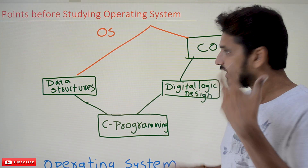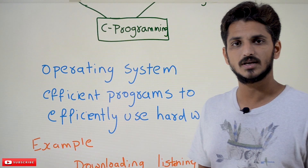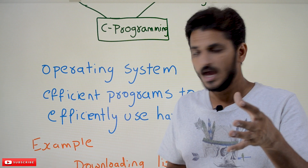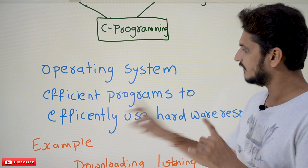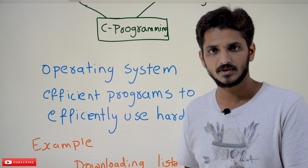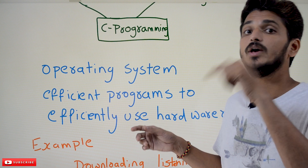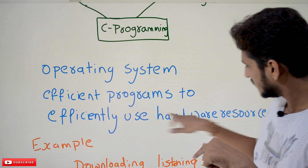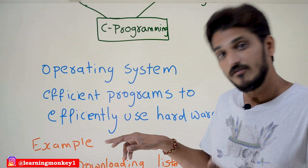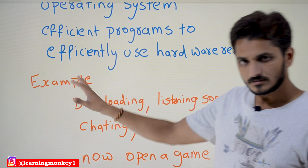Let's understand why you study operating system at this point, and what operating system means. Operating system consists of efficient programs to efficiently use hardware resources — you have to understand this point very clearly. Efficiently using hardware resources means managing the computer's hardware so that all programs and tasks can run effectively.